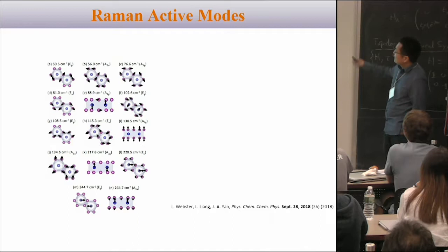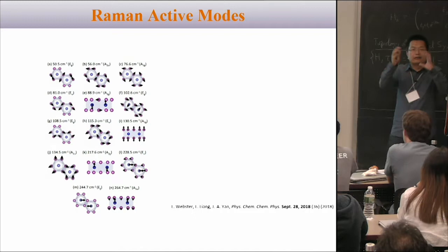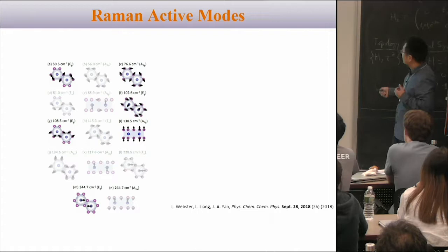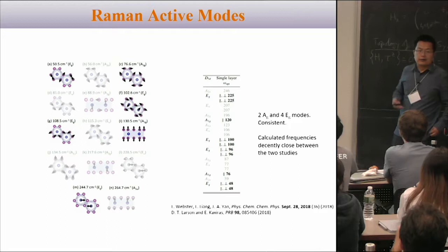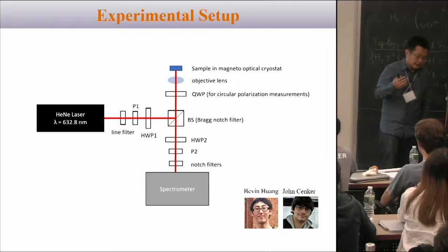All 14 phonon modes have been calculated in the literature, giving a nice cartoon showing what lattice oscillation corresponds to each mode and calculating the phonon energies corresponding to each oscillation. Our experiment looks at the Raman spectrum, trying to understand the spin-phonon coupling and what is new in these two-dimensional magnets.